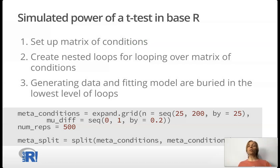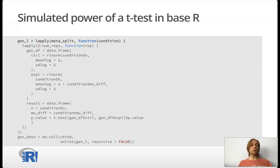Let's look at simulating power of a t-test in base R. First we might set up a matrix of conditions, created nested loops for looping over that matrix of conditions, and we know that generating data and fitting the model are buried in the lowest level of the loop, or in a custom function that you might write. Here in the example code below, I generate a matrix of conditions using expand grid for both sample size and a difference in means, and have 500 repetitions. I split that data frame into a list of one row data frames that I can easily loop over.